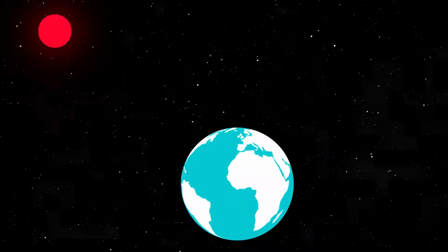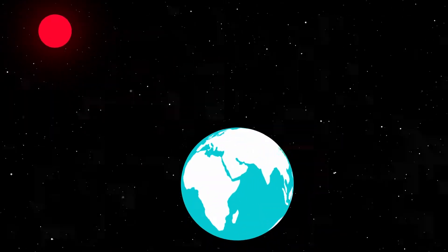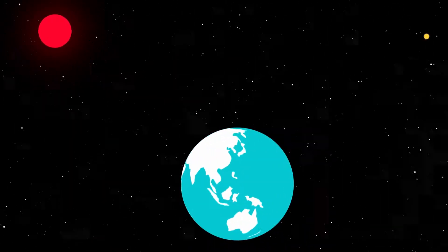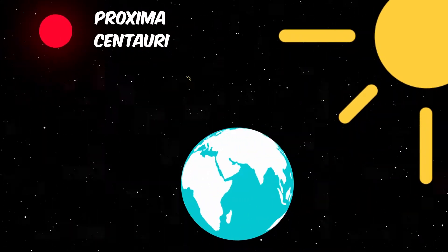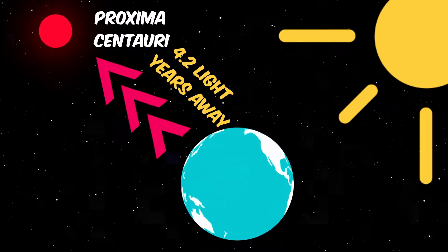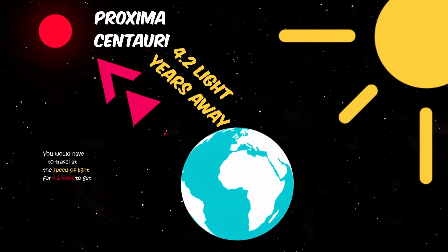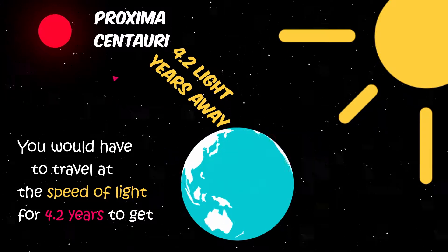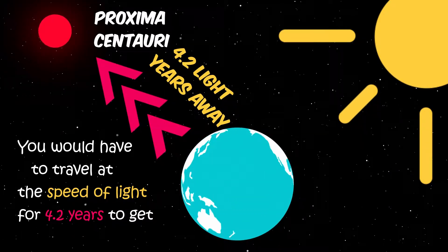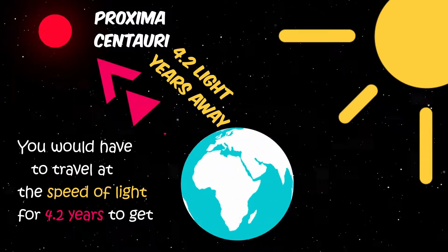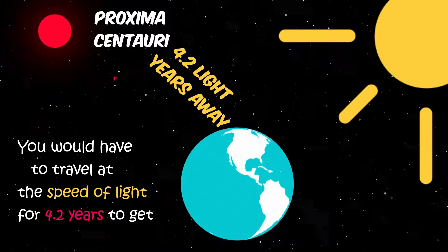If you look carefully, you will see the nearest star to Earth. After the sun, of course, it's called Proxima Centauri. It is 4.2 light years away, meaning you will have to travel at the speed of light for 4.2 years to get there. Now, that will be a long journey.